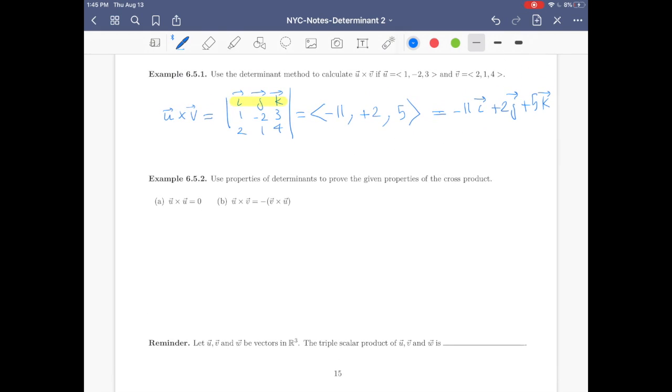Let's do example 6.5.2: Use properties of determinants to prove the given properties of the cross product. Let's look at part a. Let's evaluate u cross u, assuming u has coordinates u1 u2 u3 and v has coordinates v1 v2 v3.